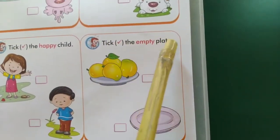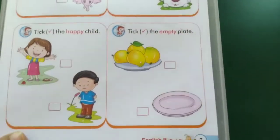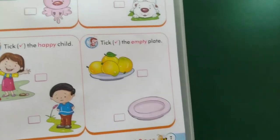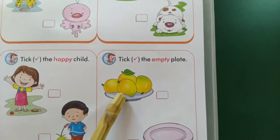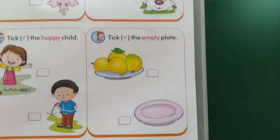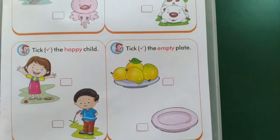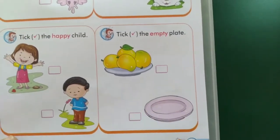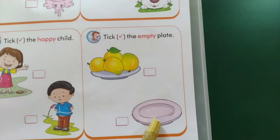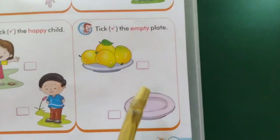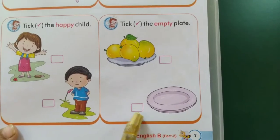Tick the empty plate. Empty means what? It means there is nothing in it. This plate has four mangoes on it — one, two, three, four mangoes. And the second plate? Nothing — this plate is empty. So tick in this box.